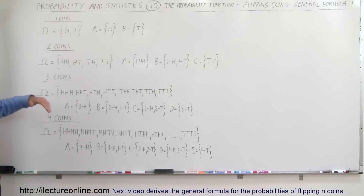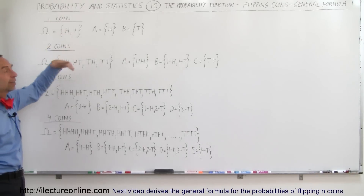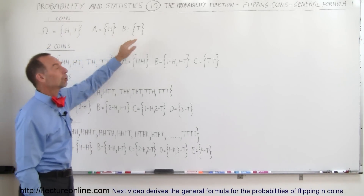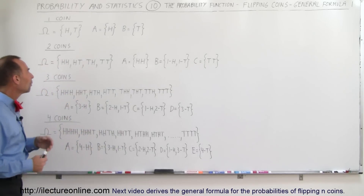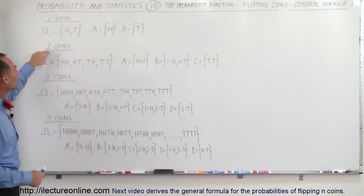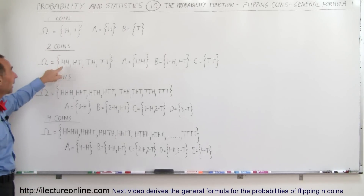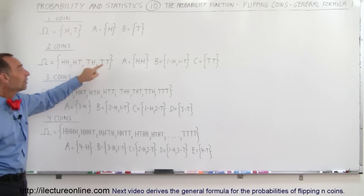First of all, we're going to take a single coin. When we flip it, the sample space will be heads or tails, so we have two possibilities. When we flip two coins, we have a sample space with four elements: we could end up with head-head, head-tail, tail-head, or tail-tail.